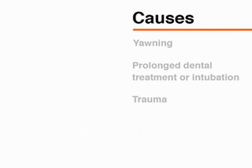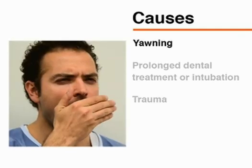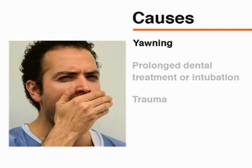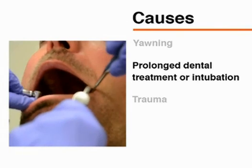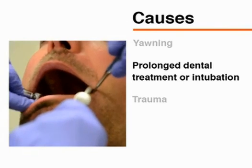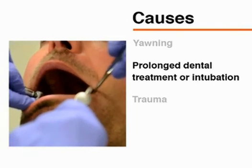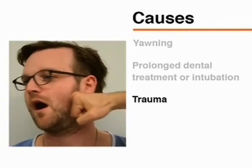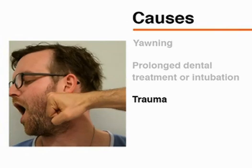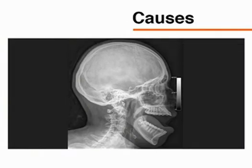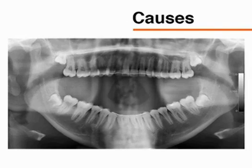Common causes of TMJ dislocation are extreme opening of the mouth, as may occur when yawning, or during prolonged dental treatment or intubation, or as a result of trauma due to a conflict or accident. Patients with acute TMJ dislocation usually present to the emergency department, but may present to general medical or dental practices.